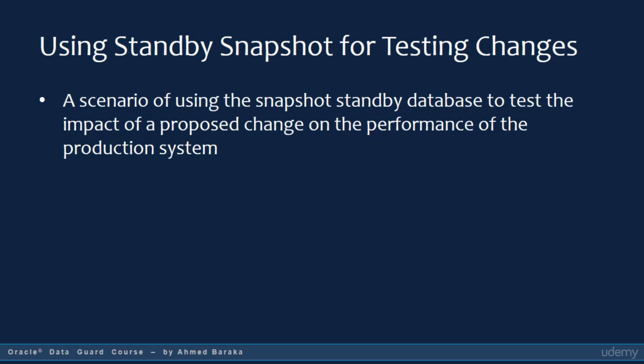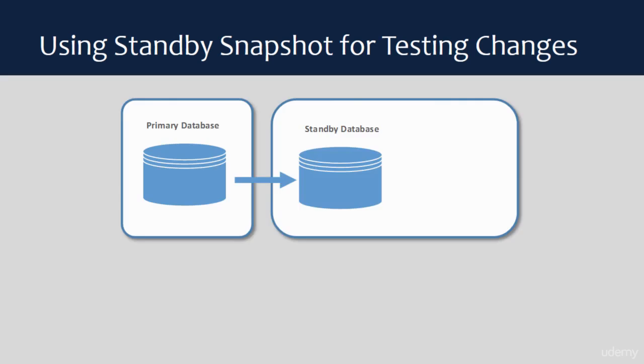In the next slide, I will show you a scenario of using the snapshot standby database. The scenario assumes that we have a production system and some changes are required on this system. We want to test the impact of the proposed change on the performance of our system. The scenario assumes we have a primary database and a physical standby database. You as a DBA have received a request to make some changes on this system and want to test how this change may affect performance.